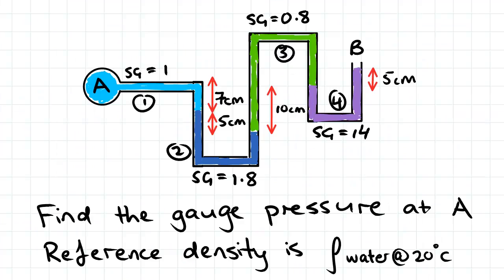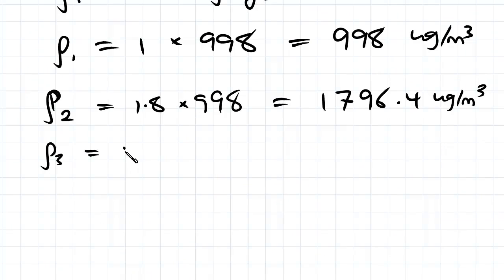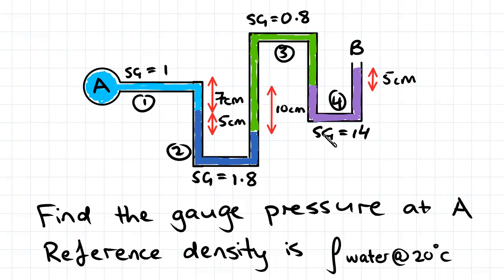For the next fluid, the specific gravity is 0.8, so 0.8 times 998 is 798.4 kilograms per meter cubed. And the last density we need, fluid 4, the specific gravity is 14.